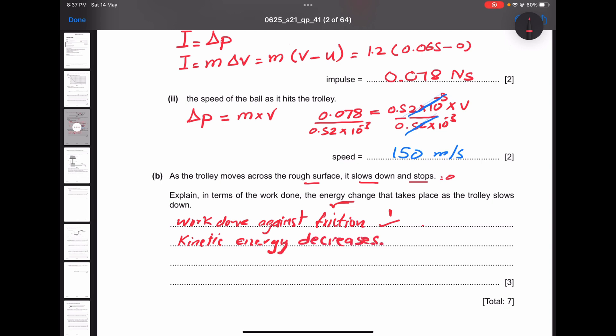For final mark, because of the friction between the trolley and the rough surface, there is thermal energy produced. So thermal energy produced.